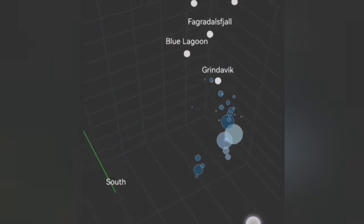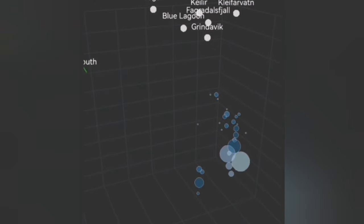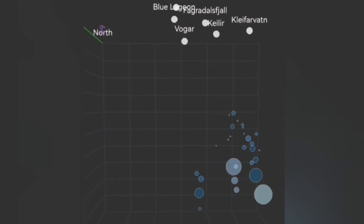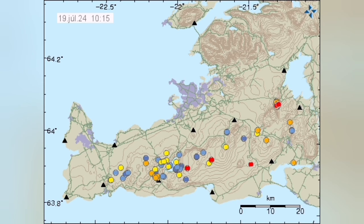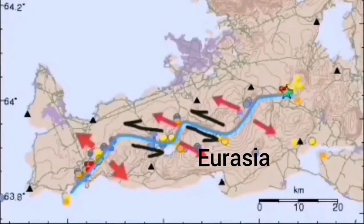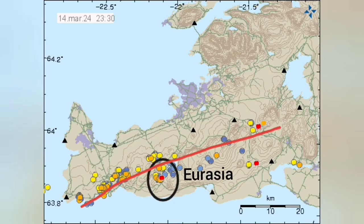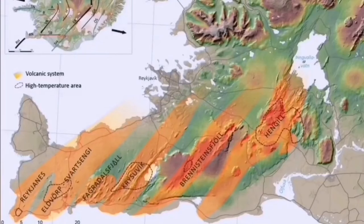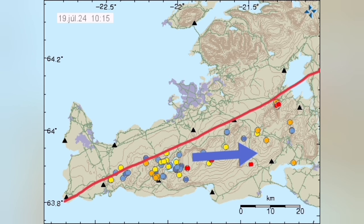This is the contact point of the Eurasian and American plates. The Eurasian plate is moving eastward, and as it moves, the transform faults transfer the movement toward the east. This is inside the Eurasian boundary, shown by the red line — this is where the earthquakes and eruptions are happening.